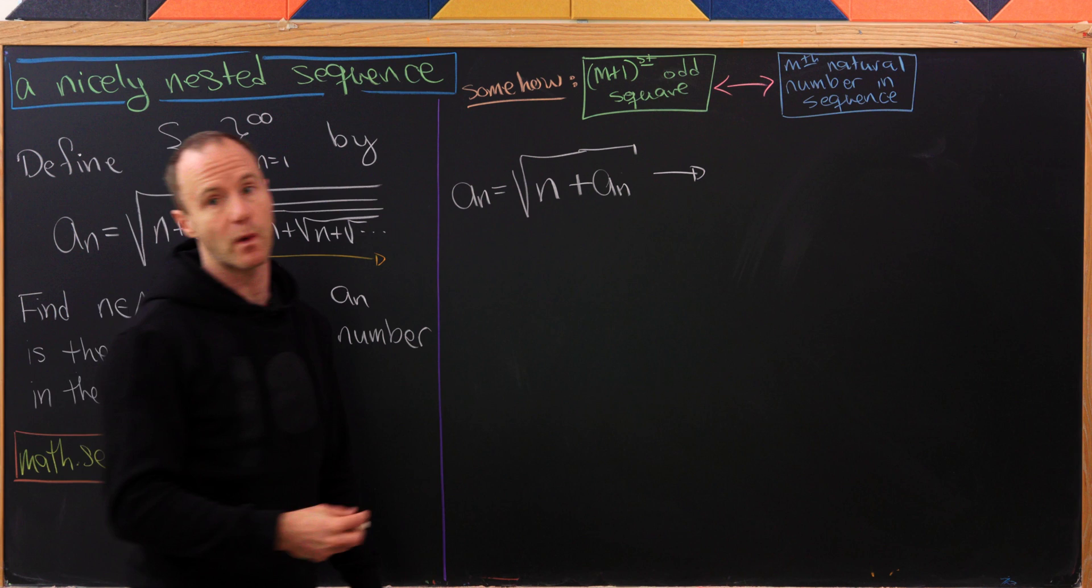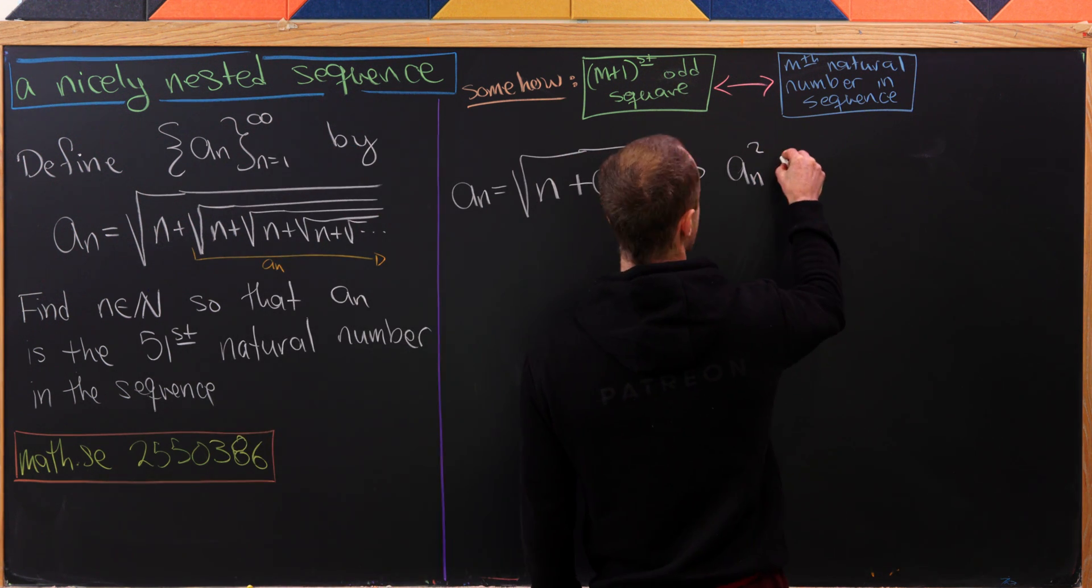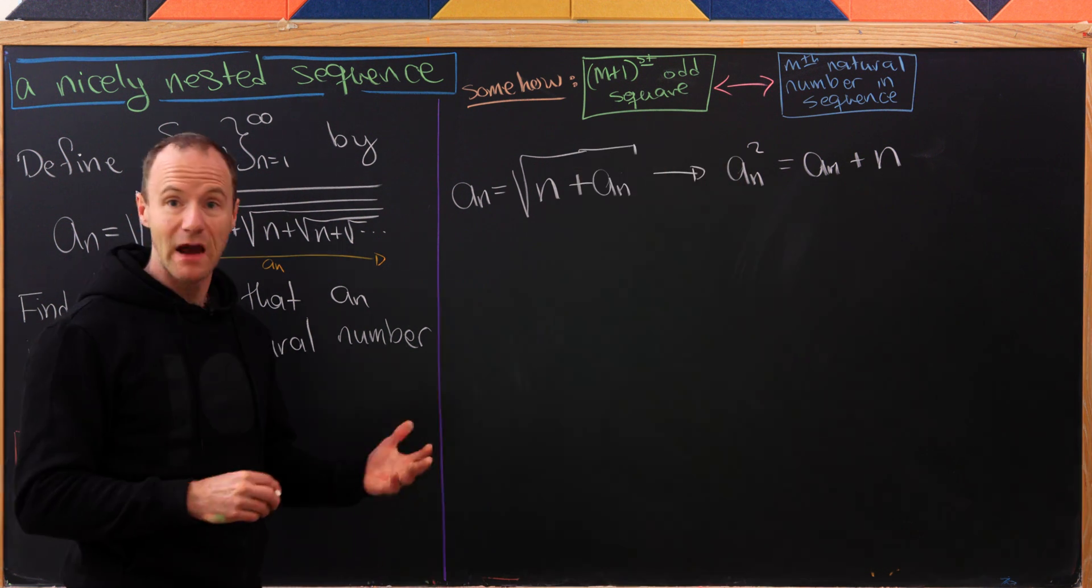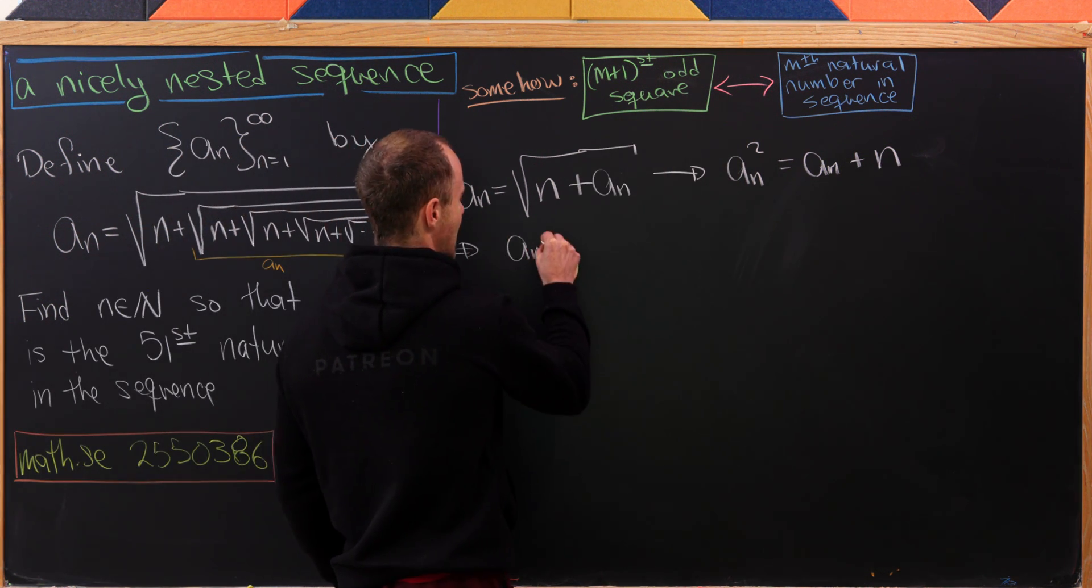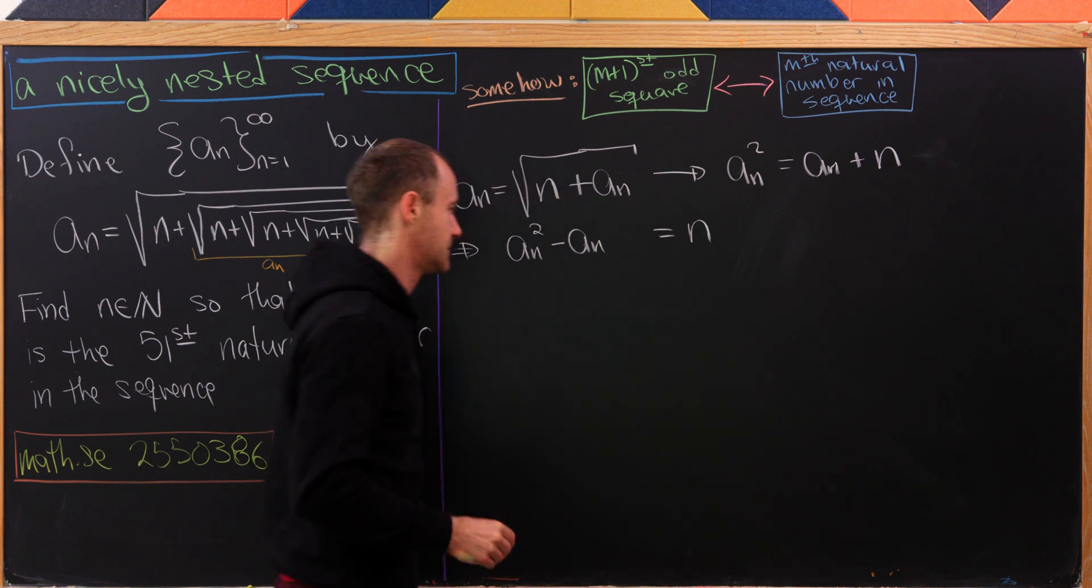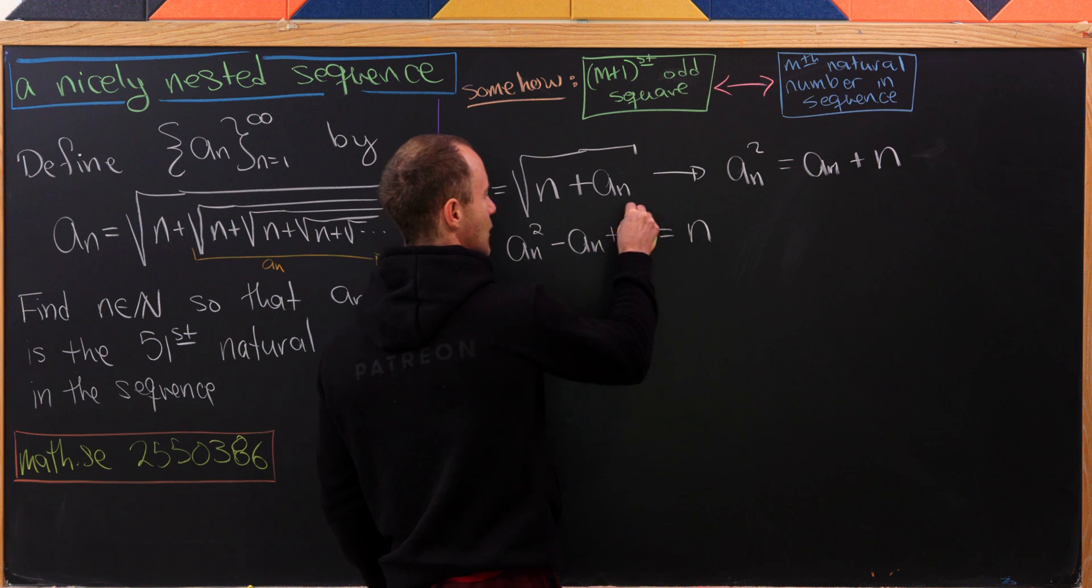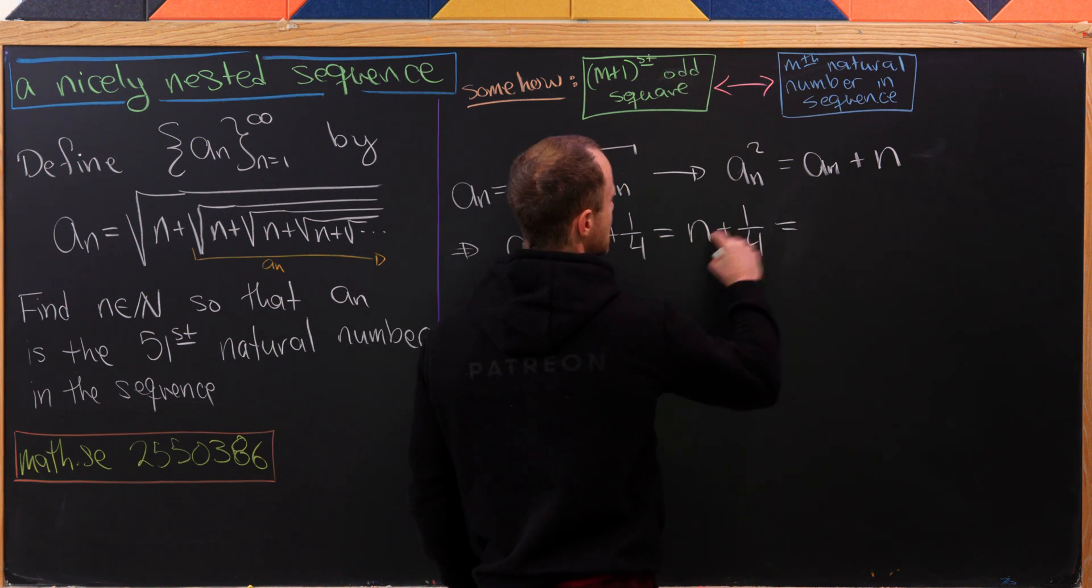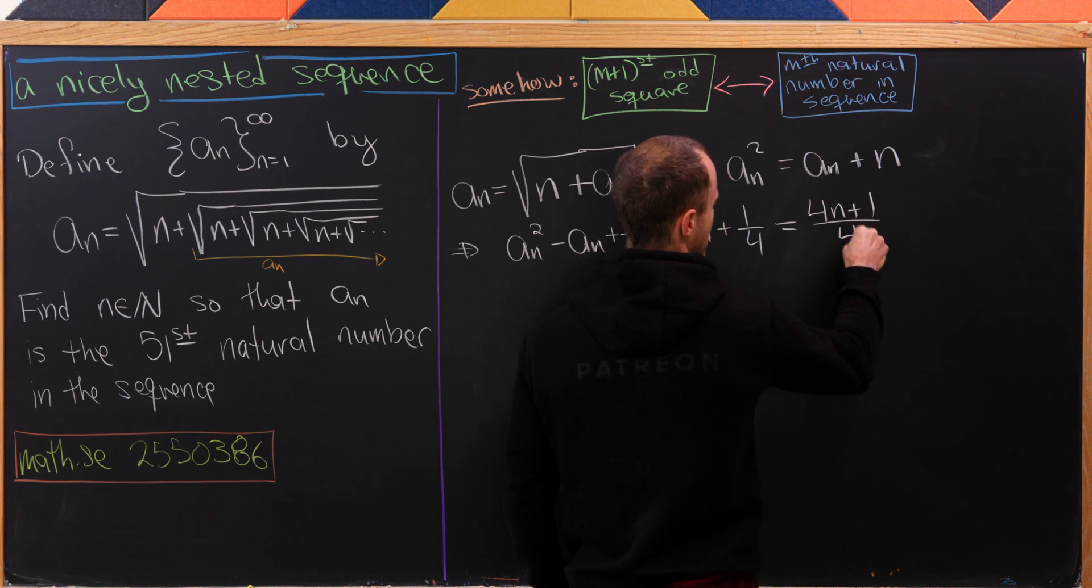We'll put a_n right here. From here, let's square both sides. We get a_n squared equals a_n plus n. We'll continue on very similarly. We'll have a_n squared minus a_n equals n. Now let's complete the square. We need to add 1/4 on both sides. Let's combine these to get (4n + 1)/4.